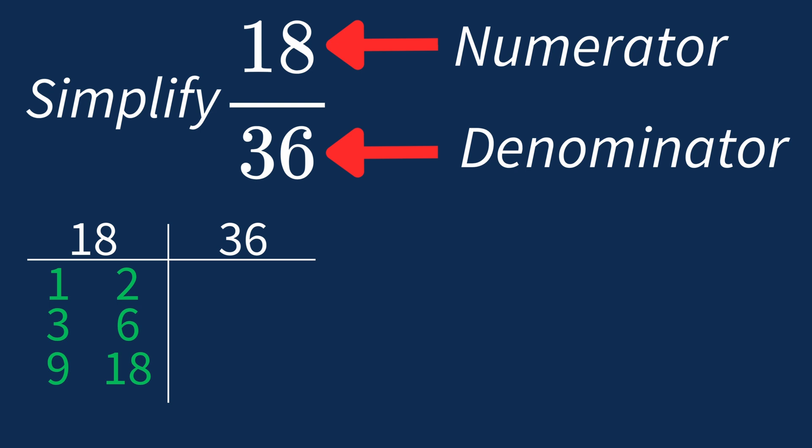For 36, the factors are 1, 2, 3, 4, 6, 9, 12, 18, and 36.